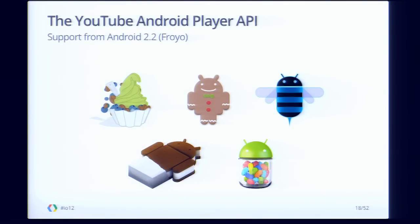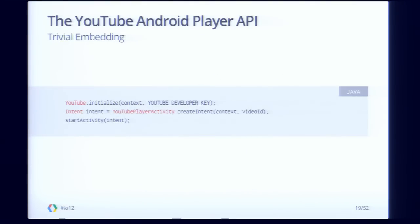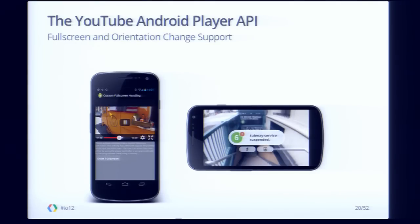We have support for a very wide range of Android platform versions, right back to version 2.2 — the Froyo release — through Gingerbread, Honeycomb, Ice Cream Sandwich, and the recently released Jelly Bean. This captures over 90% of the Android devices that are already out there. We also wanted to make it really trivial for people to embed YouTube videos in their apps — these three lines are really all that's needed to launch a YouTube video in your app. We have a lot of extra support baked into the library for full screen orientation changes, handling hiding of the system UI, and restoring that, to make it a polished app.